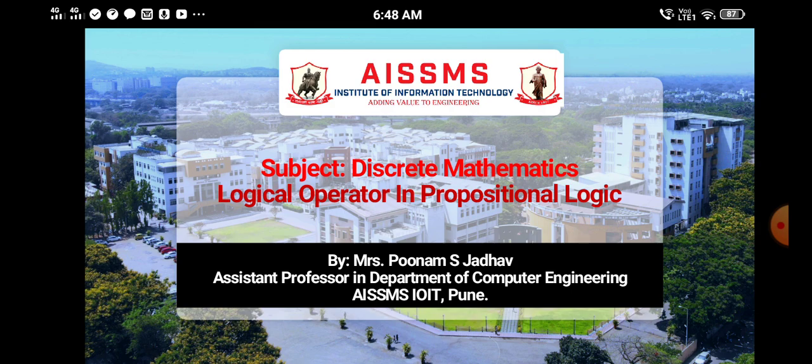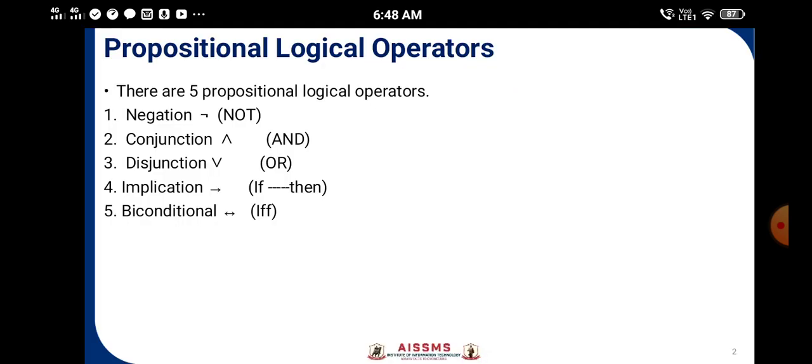Today we are going to see the logical operators in propositional logic of discrete mathematics course. There are five propositional logical operators: negation (not), conjunction (and), disjunction (or), implication (if-then), and biconditional (if and only if).